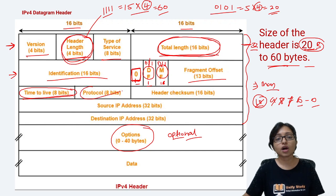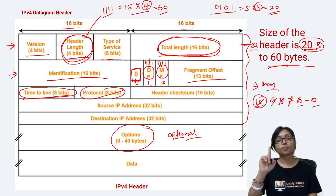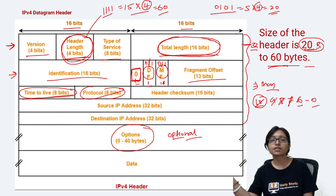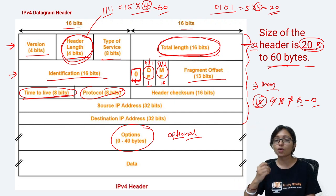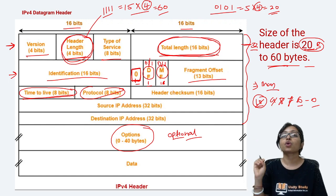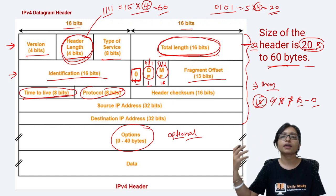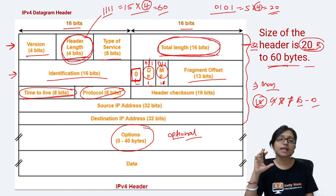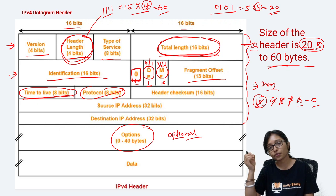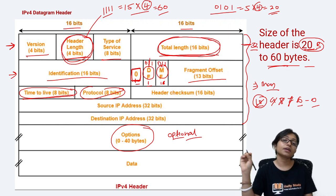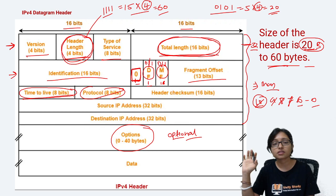Next is the Protocol field — 8 bits. The protocol number identifies which protocol is being used. There are many protocols, and popular ones have fixed numbers. For example: 1 is ICMP, 2 is IGMP, and 6 is TCP. Through this number we can identify the protocol.